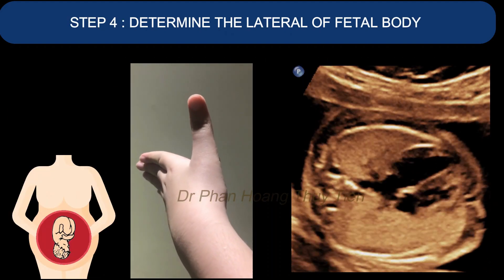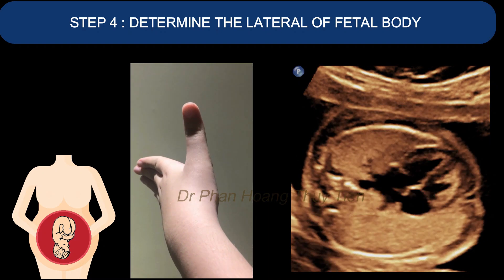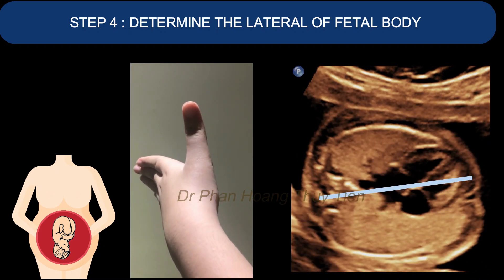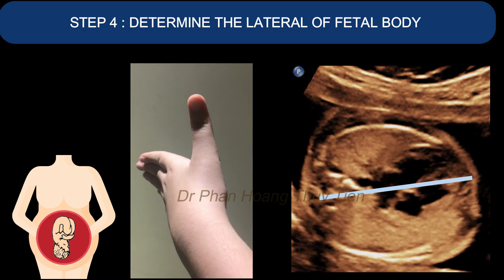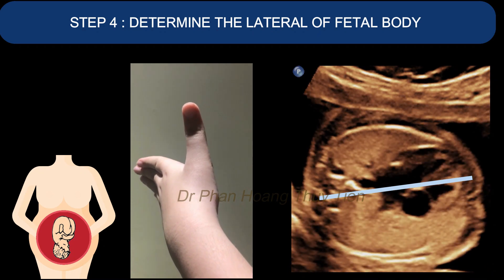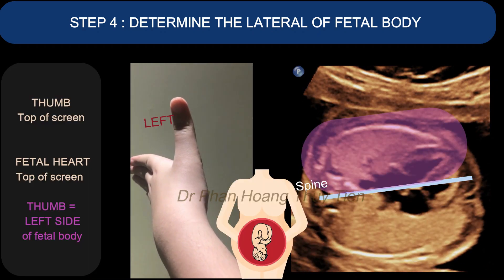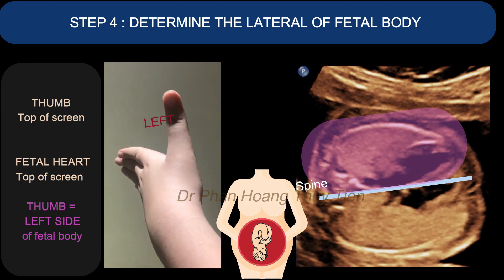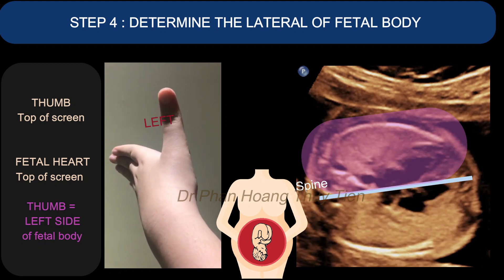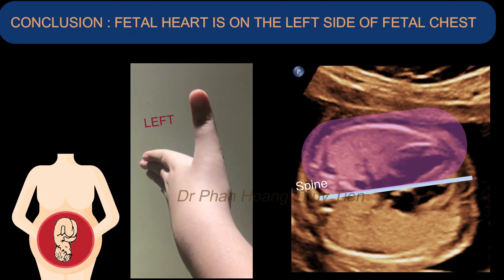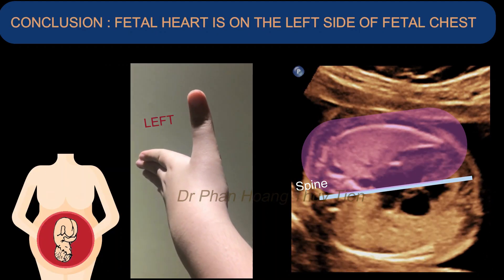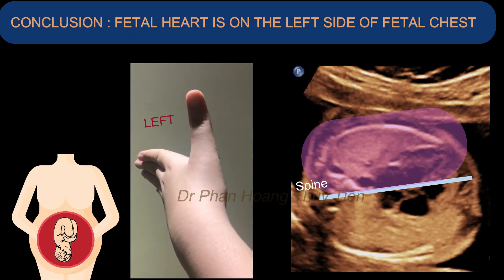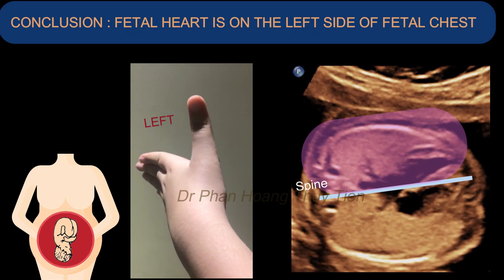Step 4. With the transverse view, you need to create a straight line from the spine that divides the fetal body in half, then apply the technique. You will notice the thumb and heart are positioned accordingly, which leads us to the conclusion that the fetal heart is on the left side of the fetal chest.